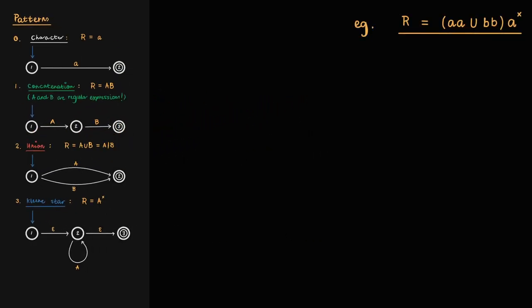Let's use the regular expression R equals (aa union bb)a*. To begin the construction of the NFA, create a start state and an accept state, and label a transition between them with R.